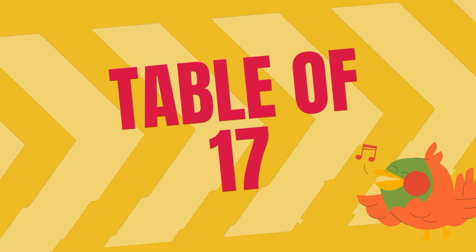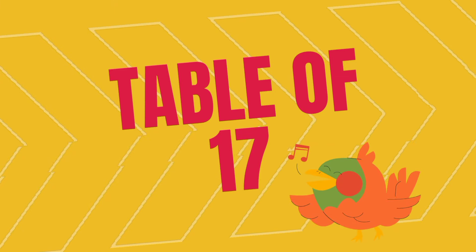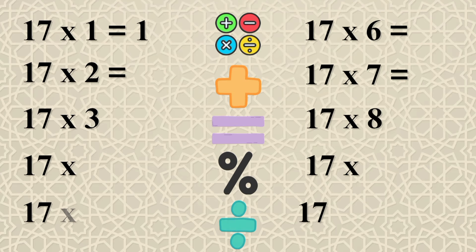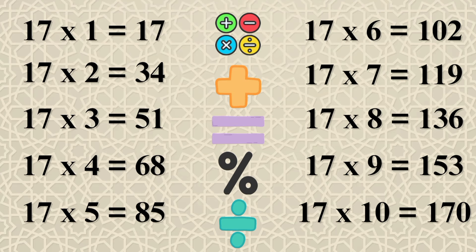Table of 17: 17×1=17, 17×2=34, 17×3=51, 17×4=68, 17×5=85, 17×6=102, 17×7=119, 17×8=136, 17×9=153, 17×10=170.